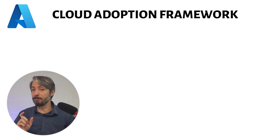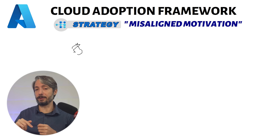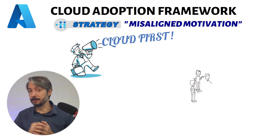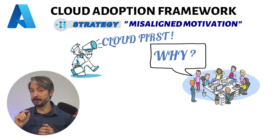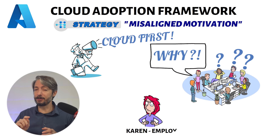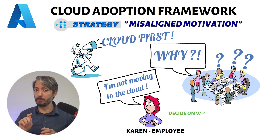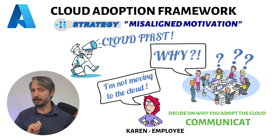The next anti-pattern is misaligned motivation. As in the previous example, a company announces a cloud-only strategy. The question from all departments is: why are you doing this? Not everyone in the company is automatically going to understand what a cloud-only strategy is and why it has been taken. This can cause friction within the company, resulting in slow adoption as not everyone is aligned. It's simple to avoid this anti-pattern — decide why you want to adopt the cloud, clearly define your reasons and communicate them with the company.